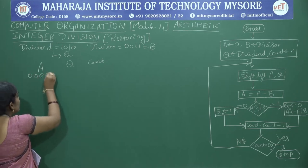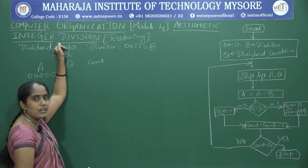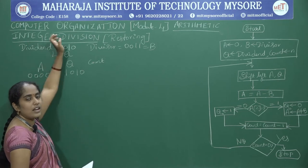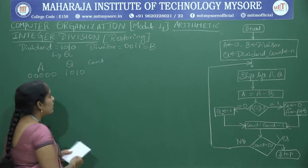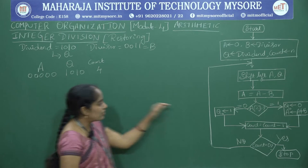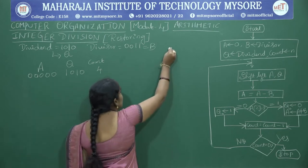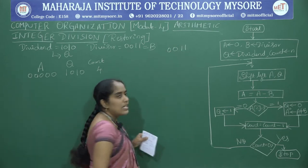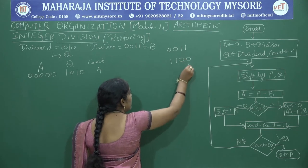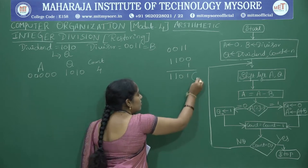A contains 5 zeros. Q equals 1010. Since both divisor and dividend contain 4 bits, count equals 4. Before the next step, we take the 2's complement of B. B is 0011. Take the 1's complement: 1100, then add 1 to get 1101. So minus B is 1101 and plus B is 0011.